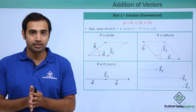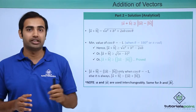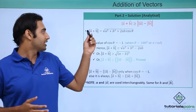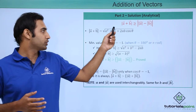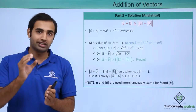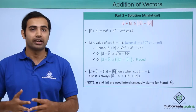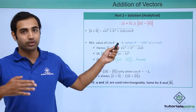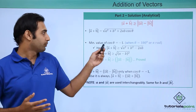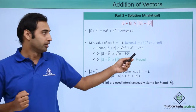Now for the second part, we have to prove that mod of A plus B is greater than or equal to the modulus of the quantity magnitude of A minus magnitude of B. We are interested in the minimum value of the vector sum. Writing modulus of A plus B as the square root of A squared plus B squared plus 2AB cos theta, the minimum of this expression comes when cos theta takes its minimum value of minus 1, at an angle of 180 degrees or pi radians. So modulus of A plus B is always greater than or equal to this minimum value.